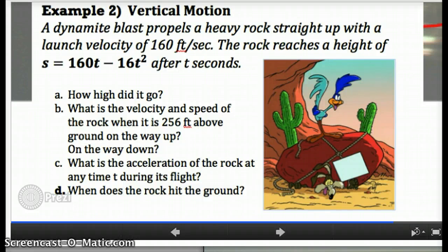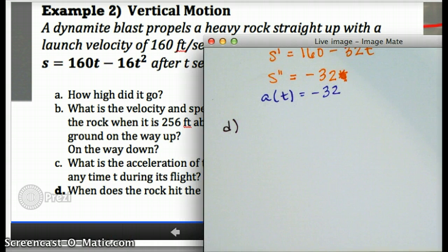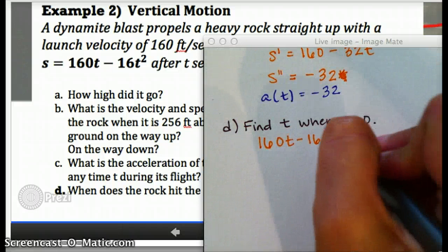In d, we're asked to find when does the rock hit the ground. You should recognize when means what time, and if I'm looking for time, I'm going to write an equation and solve for t. Now the question is, what equation am I going to write? Is it an equation with the derivative, with the original function, with the second derivative? The clue is in the end here. Hitting the ground means that the height of the rock is 0. So we're actually talking about its position. So I want to set up an equation where the position of the rock equals 0, and then solve for t. Here's what it looks like. We take the original position graph and set it equal to 0.